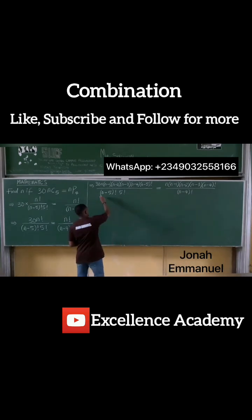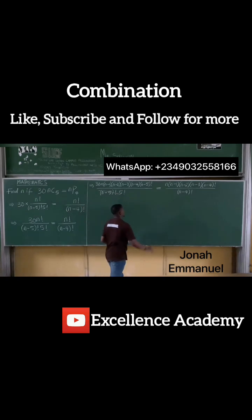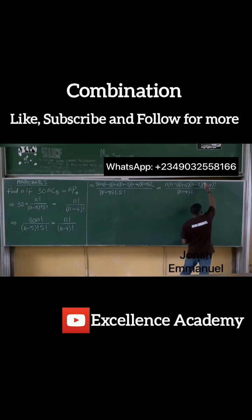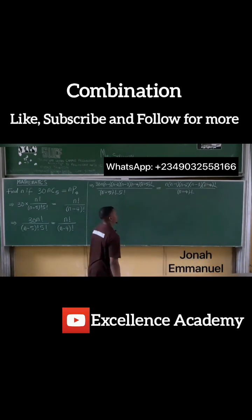What can cancel out from here? n minus 5 factorial can cancel n minus 5 factorial, also n minus 4 factorial here can cancel n minus 4 factorial here. So we said if you have the same terms on both side of the equation, they can cancel out.